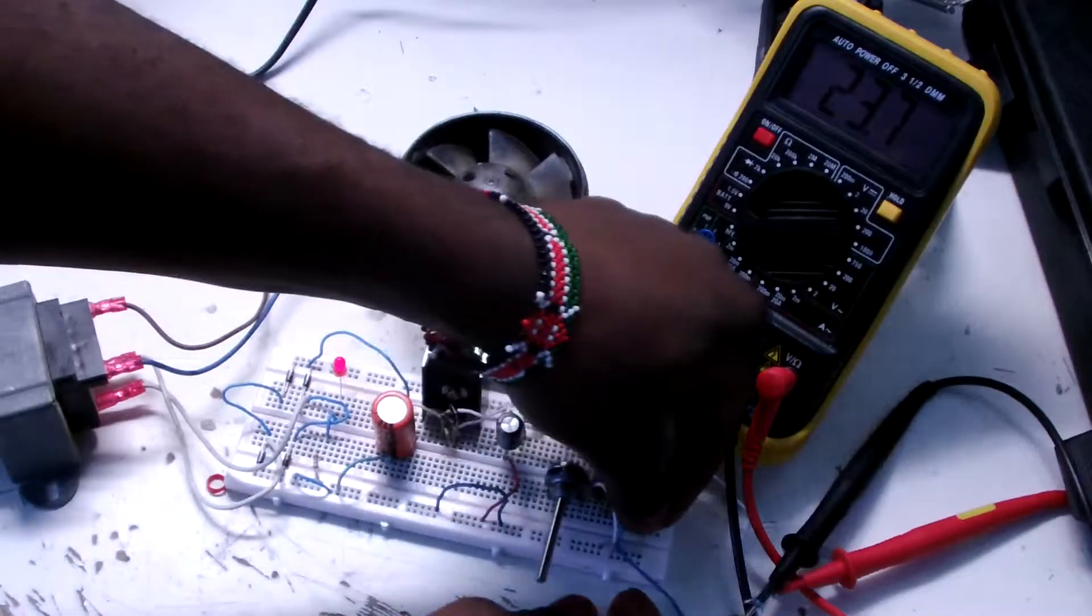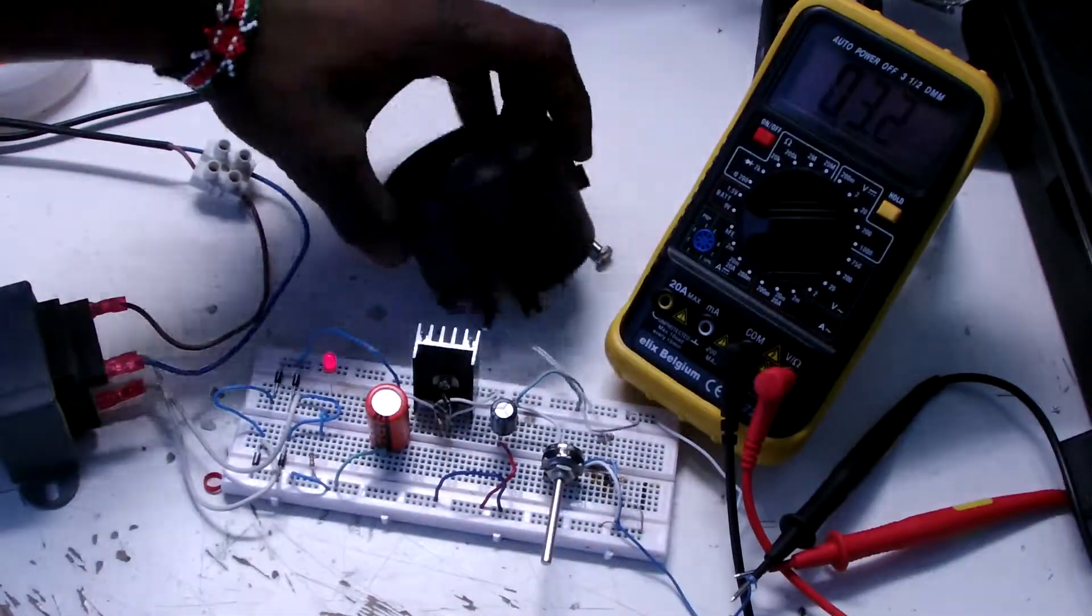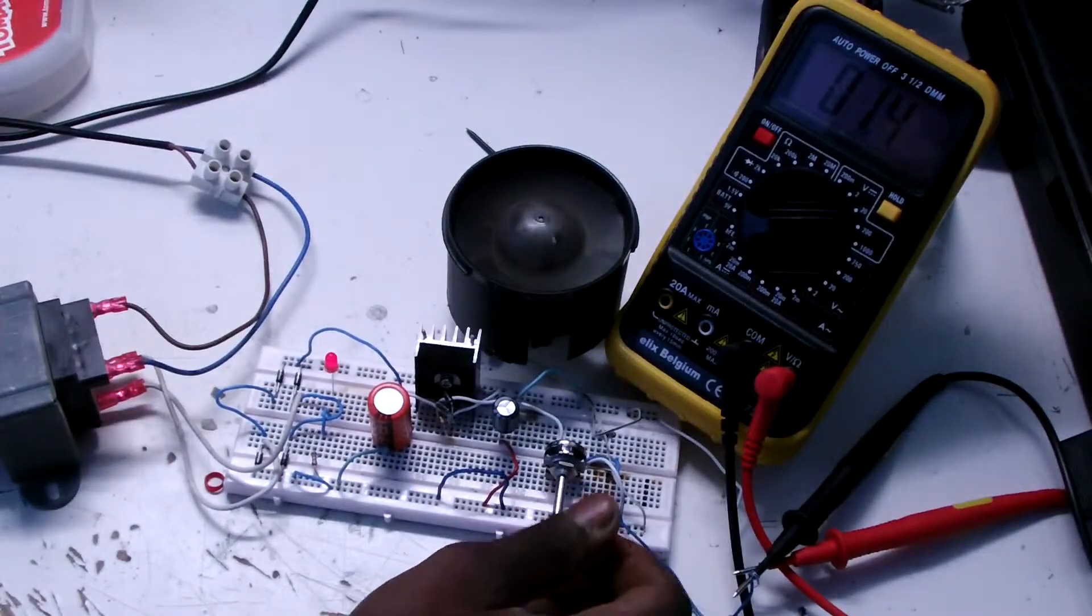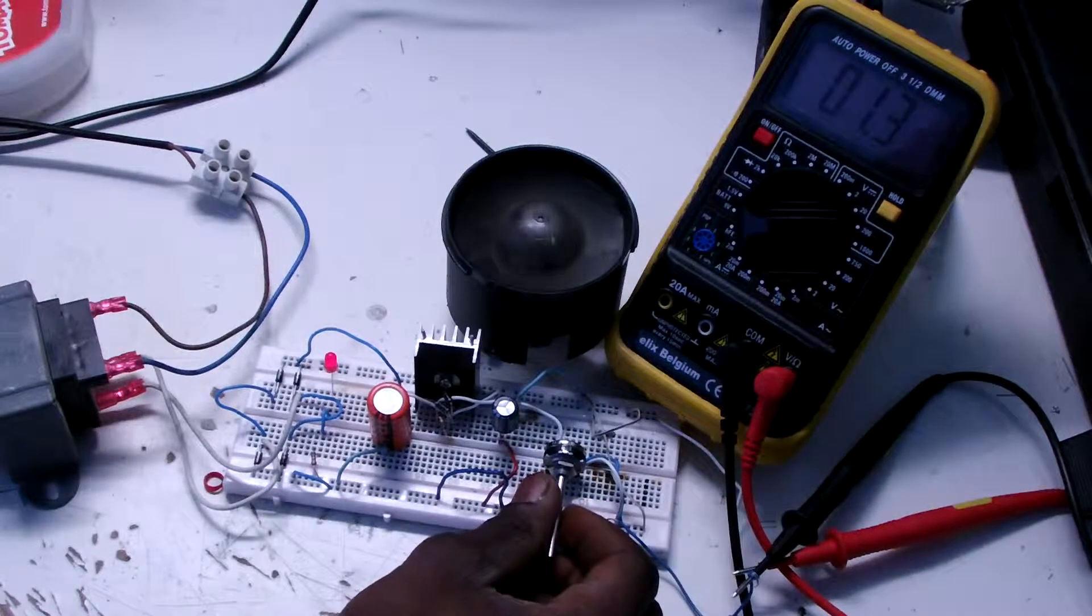Now we're gonna start from 1.2 or 3 volts and you see it's turning but very slowly. If I increase the threshold here, the speed increases.